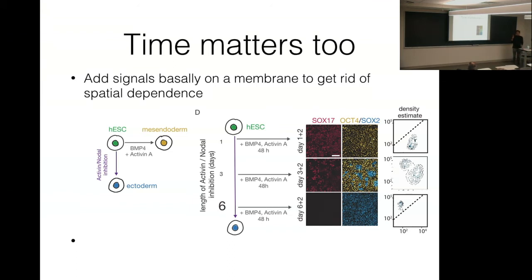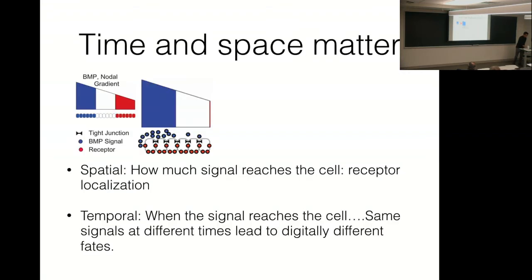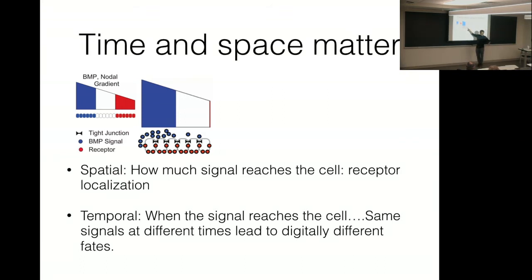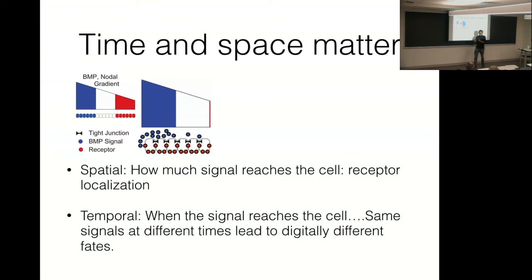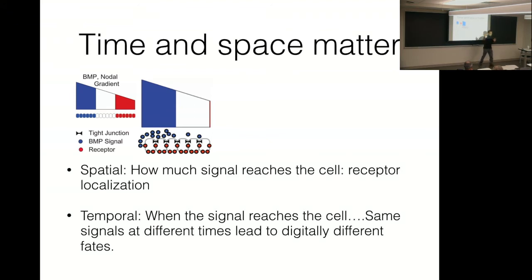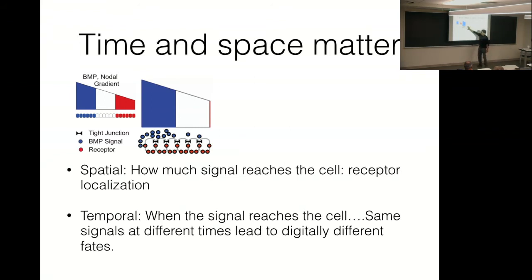Space matters, time matters, and the problem gets dirty. If I am a cell inside the colony, I start marching toward becoming the outside of the body. Signals have to come around the bottom to reach me. In the meanwhile, I'm happily marching along until I see the signal. Depending on when I see the signal, my competence to become different things changes. So this coupling between spatial diffusion timescale and the internal state of the cell are both changing simultaneously — patterning can be exceptionally complicated.